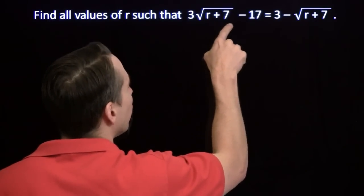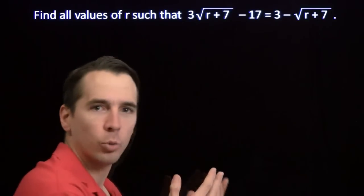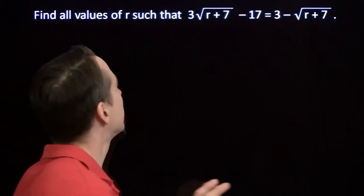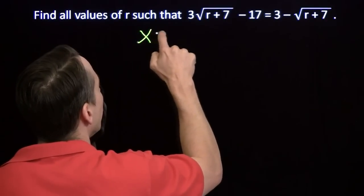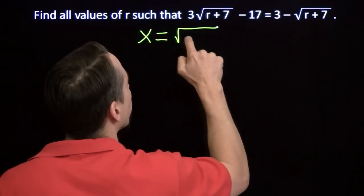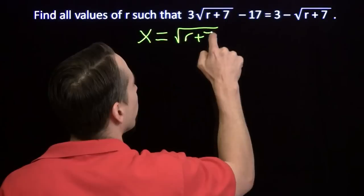Here's how it works. This is scary. The square root of r plus 7 thing is just terrifying. We're going to make it go away. We're going to say x equals the square root of r plus 7.